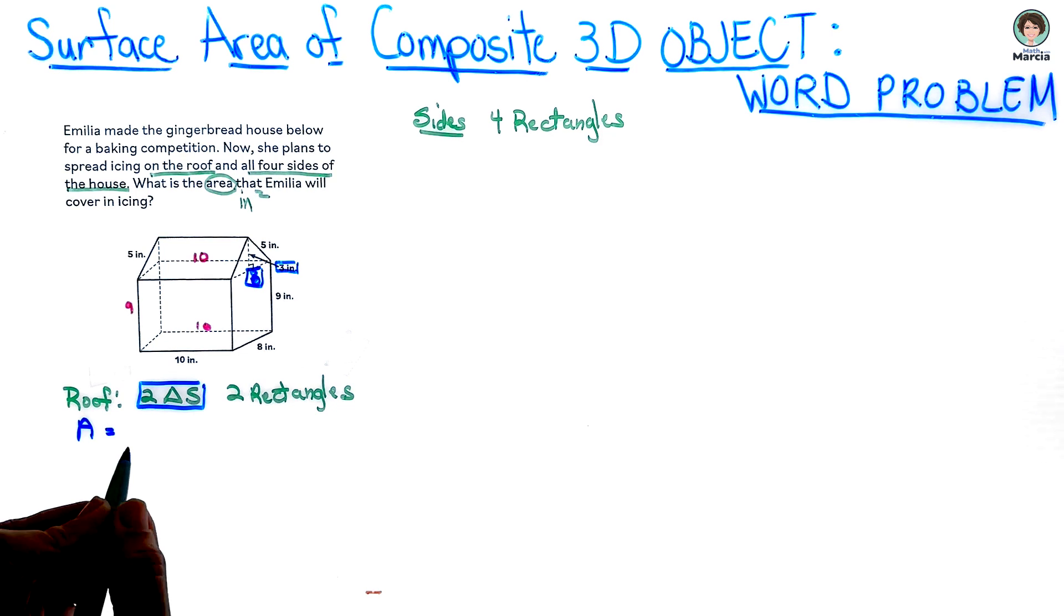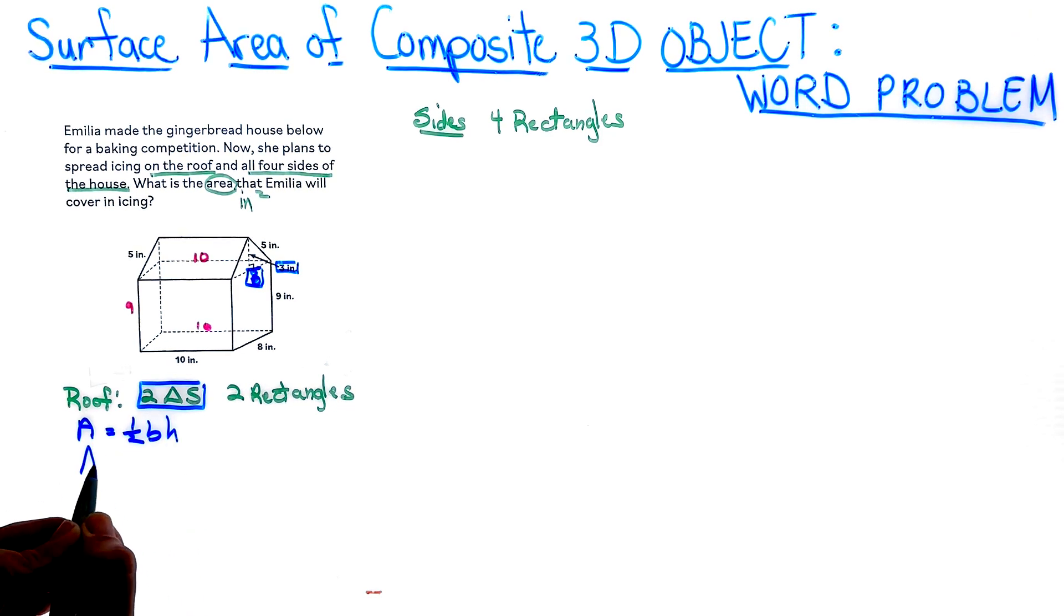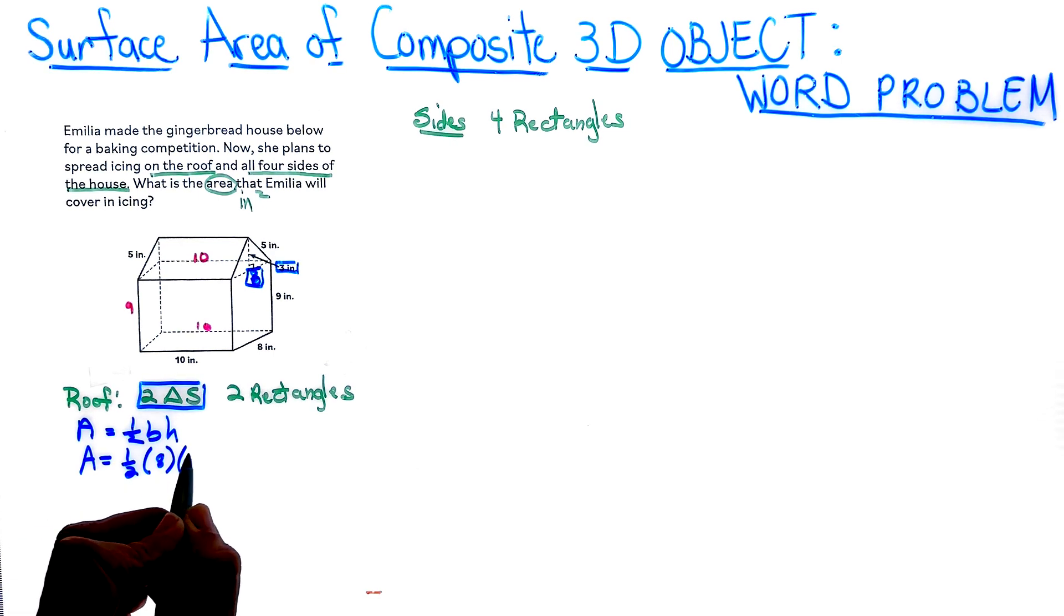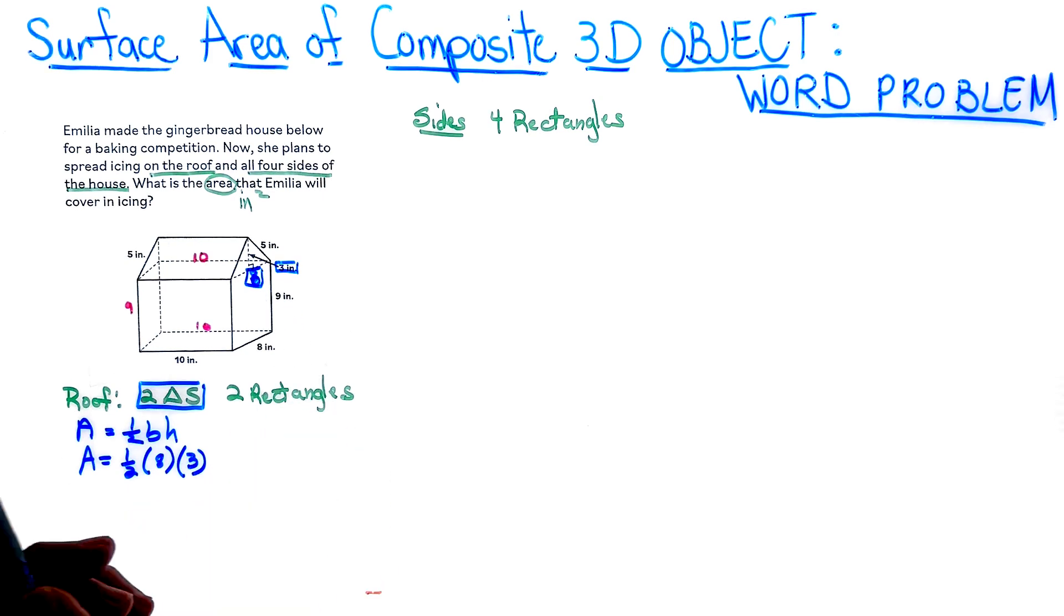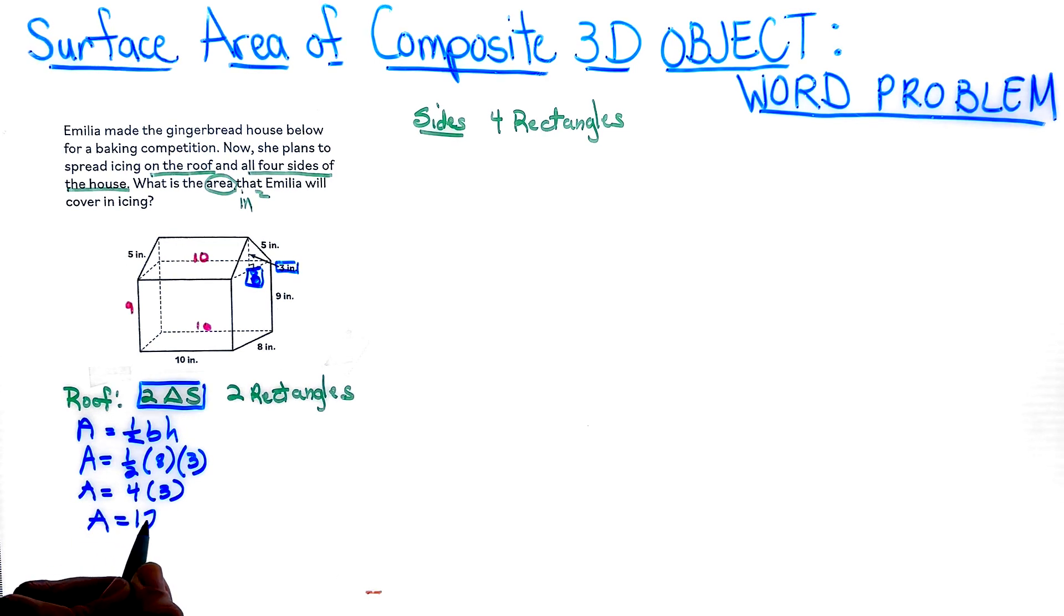So area is equal to one half base times height. Area is equal to one half. The base was eight and the height was three right here. So one half of eight is four and times three. So our area is going to be equal to 12, but that is just for one. So we need to go ahead and say 12 times two because we have two triangles is equal to 24, and that is going to be in inches squared. So there is our first dimension.